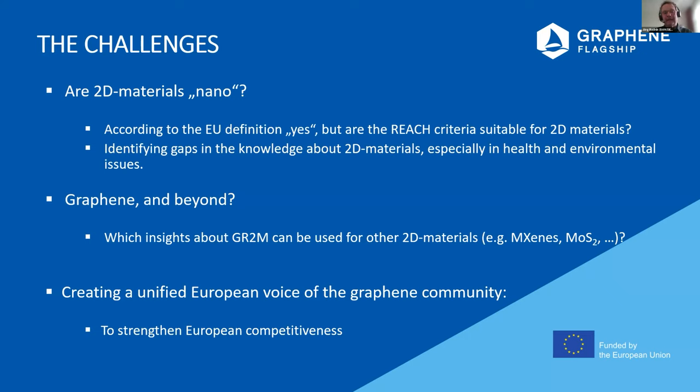There's always a discussion with companies about standard methods — particularly XPS and SEM — and companies say they need easy and validated quality control methods, thinking about optical methods, easy titration methods, and so on. There is also always a discussion in the graphene community about whether 2D materials are really nano. According to the EU definition, yes, but there must be a discussion about whether the REACH criteria are really suitable for 2D materials. We must identify gaps in the knowledge about 2D materials, especially in health and environmental issues.